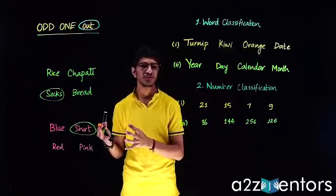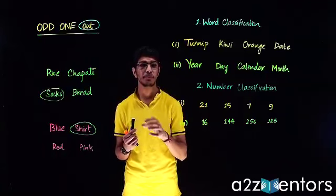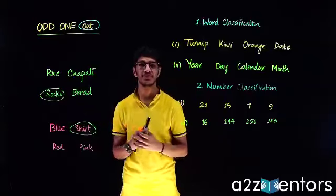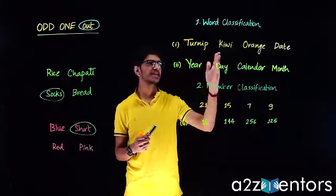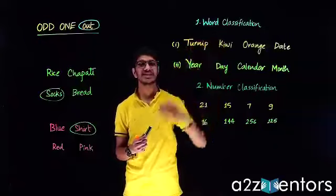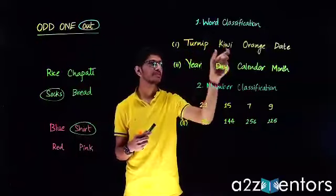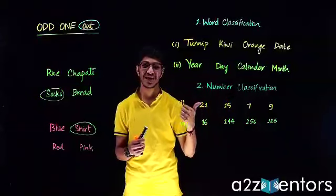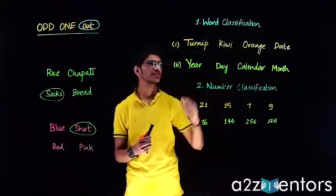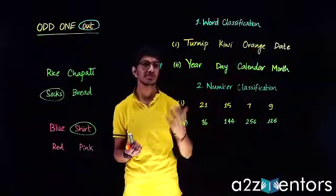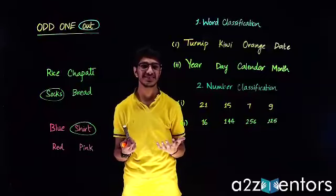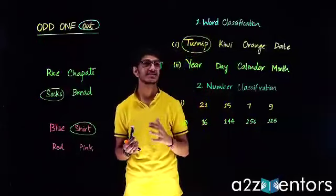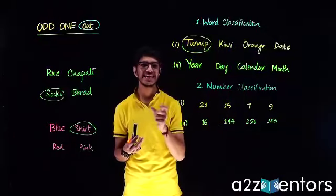In word classification, we are given a set of words out of which we have to identify the odd one out — the word not following the property the rest of the elements follow. For example: turnip, kiwi, orange, date. Kiwi, orange, and date are all fruits — 'date' here is the fruit, not the time. But turnip is a vegetable, so turnip is certainly the odd one out.